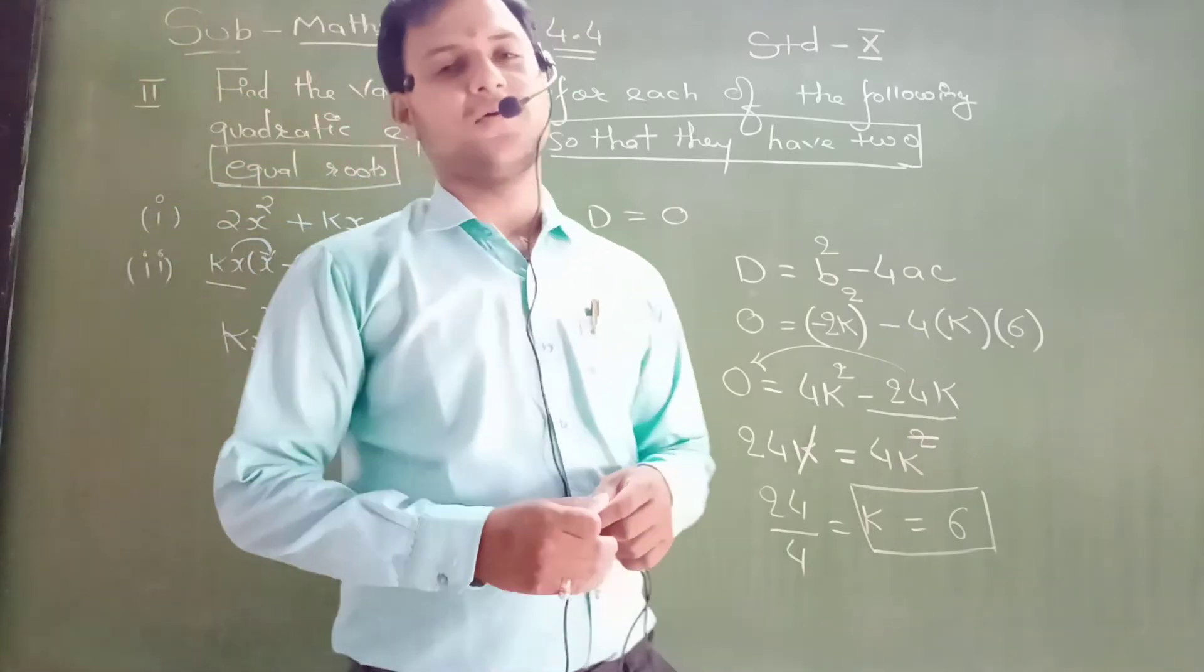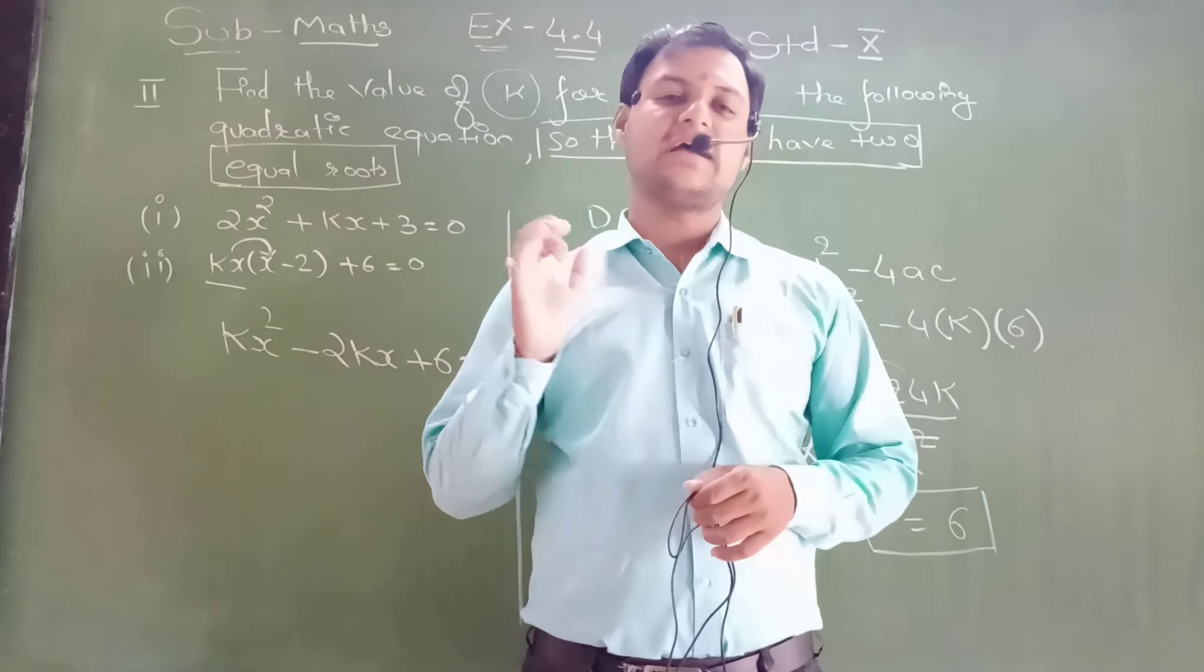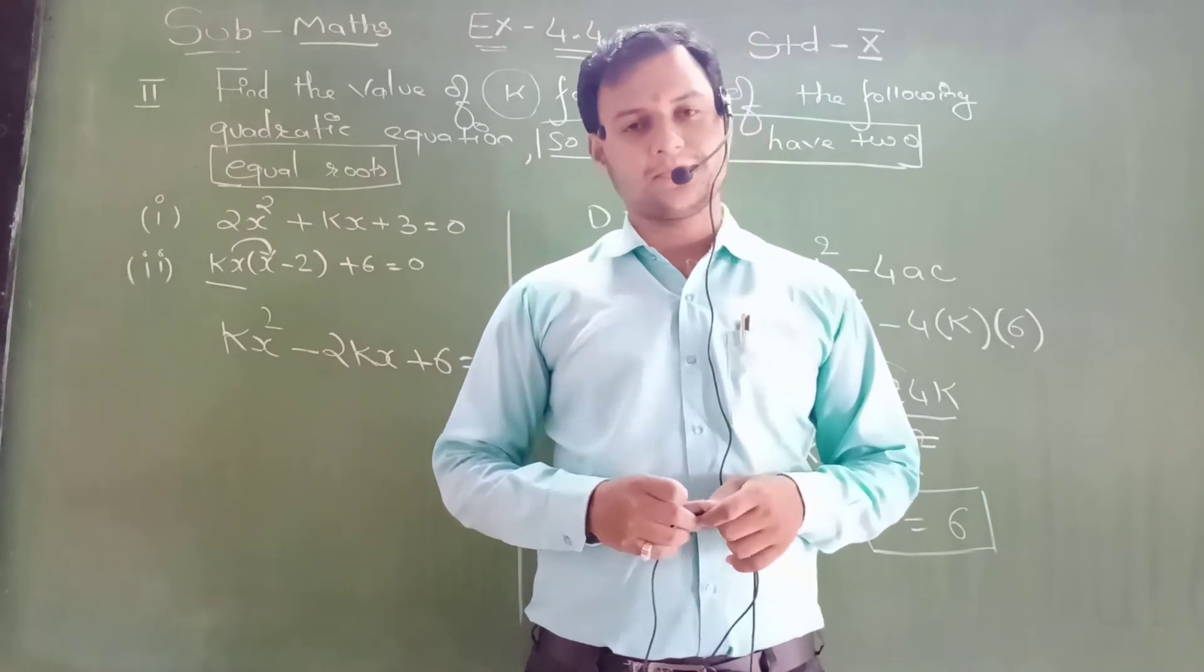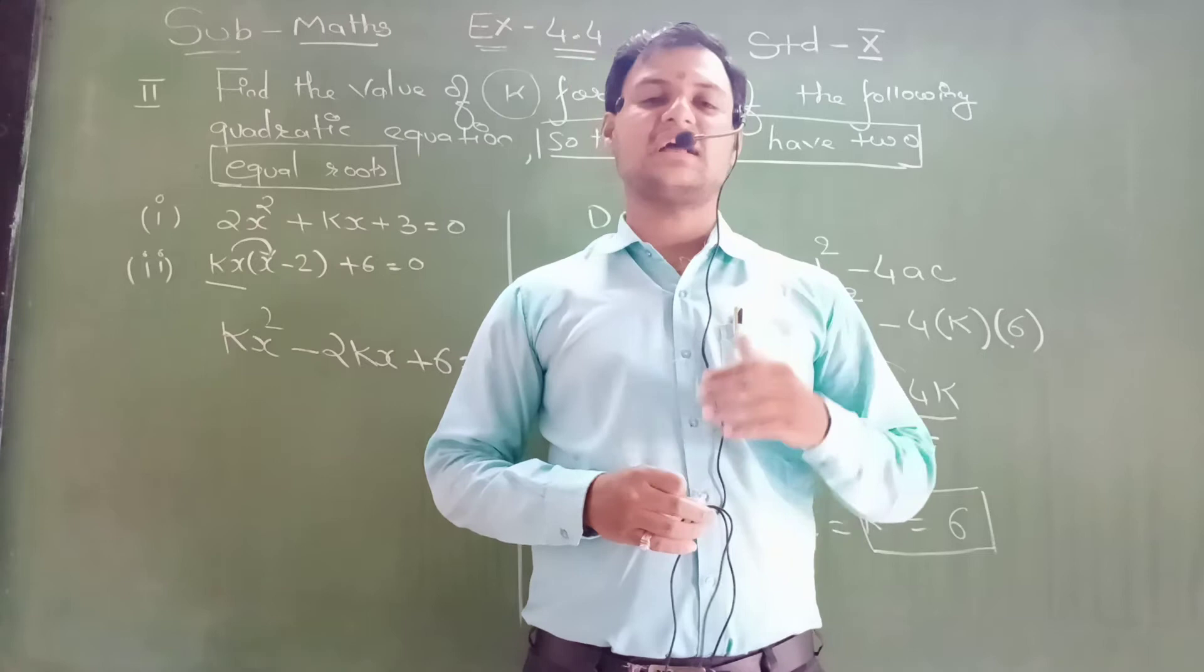So it is 24k equals 4k². Clear. Now k is deducted. 4 will be in the division. So 24 by 4 equals k. And answer is 6. 6 × 4 is 24. So k equals 6.